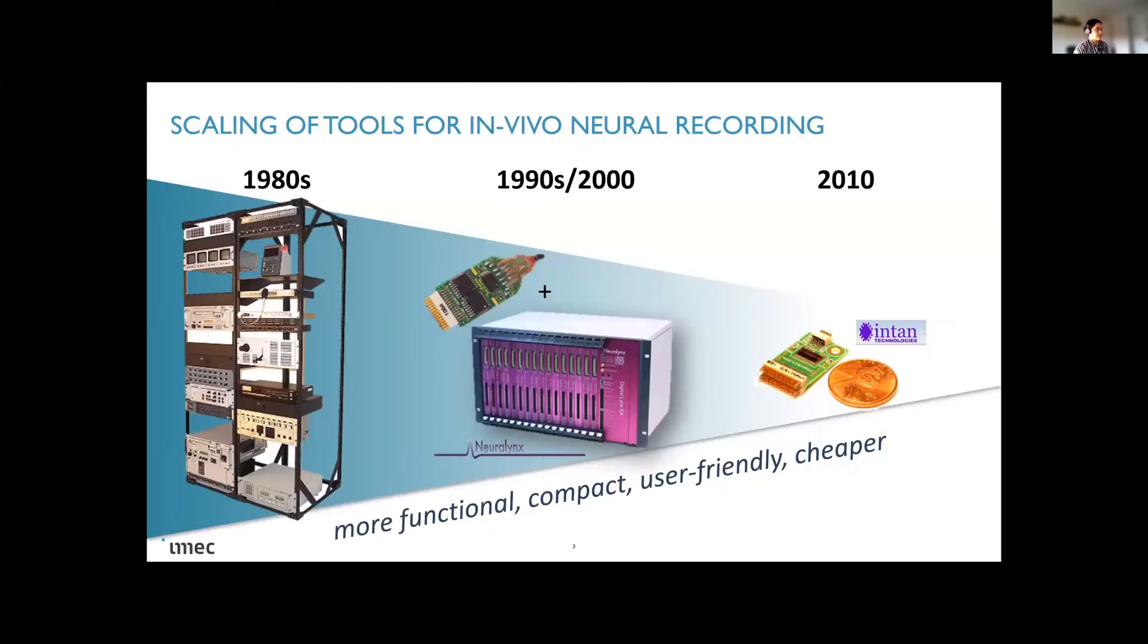The development of Neuropixels was motivated by this need to scale current neural recording technologies. And of course, CMOS was a very good candidate to help with this scaling because you can develop very small circuits and high performance circuits in very small areas. So the objective of this upscaling was to try to provide you as neuroscientists with a better tool that can record many more neurons in a very compact and user-friendly way and also at low cost.